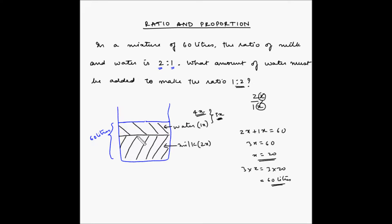Now, basically what happened here is out of 60 liters, 2 multiplied by 20 which is 40 liters is milk and 1 multiplied by 20 which is 20 liters is water.